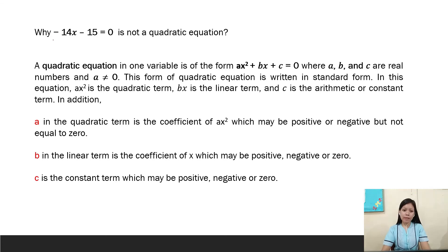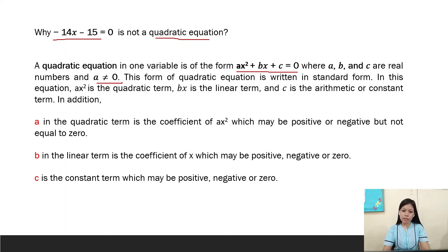Therefore, -14x - 15 = 0 is not a quadratic equation. To summarize: a quadratic equation in one variable is of the form ax² + bx + c = 0, where a, b, and c are real numbers and a ≠ 0, written in standard form. ax² is the quadratic term, bx is the linear term, and c is the constant term. The equation -14x - 15 = 0 is not quadratic because there is no quadratic term.